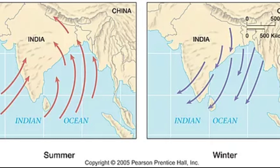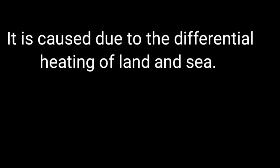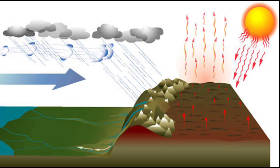With regard to formation, differential heating of land and sea leads to the formation of monsoon winds. As you can see in the picture, land quickly heats up whereas the sea takes more time. This is because land is opaque in nature whereas the sea is transparent. As a result, low pressure develops over the land and high pressure develops over the sea, so winds blow from high to low pressure.